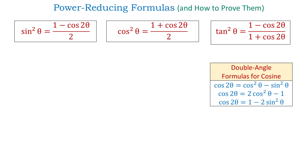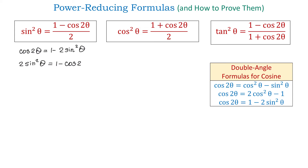First, I will write down this formula: cosine of 2 theta equals 1 minus 2 sin squared of theta. Then, I will move cosine of 2 theta to the right and negative 2 sin squared of theta to the left. Then, I will have 2 sin squared of theta equals 1 minus cosine of 2 theta. Dividing both sides by 2, the 2 cancels on the left, giving sin squared of theta equals 1 minus cosine of 2 theta over 2.